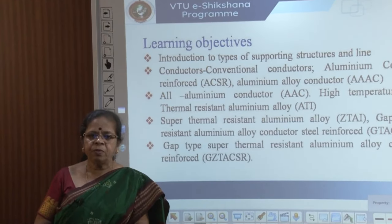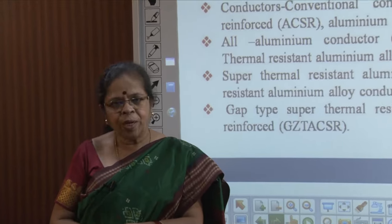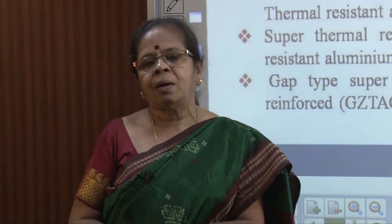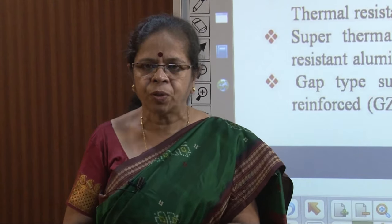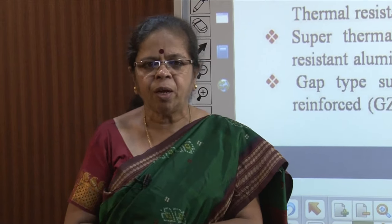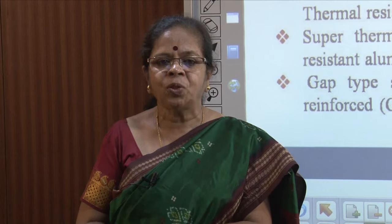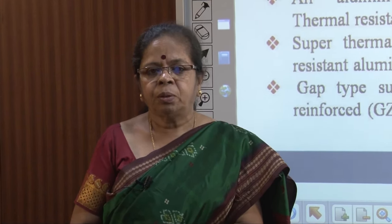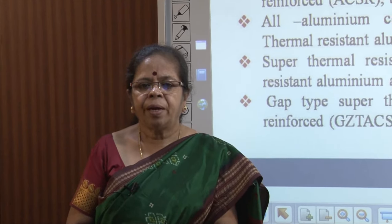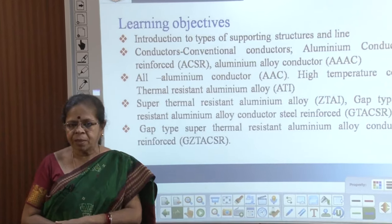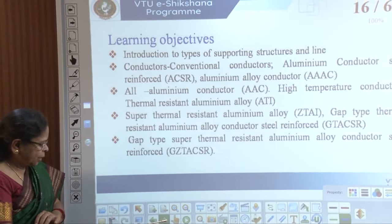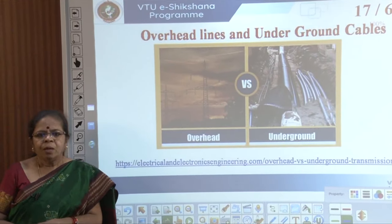We have now satisfied our objectives of understanding EHVAC, ultra-high AC, HVDC, their advantages and disadvantages. Let us move on to the next set of learning objectives: what are the supporting structures and what are the different types of conductors used — aluminium, copper, super thermal resistance, gap type, aluminium alloy conductors, and so on. We will study all this in the following session.